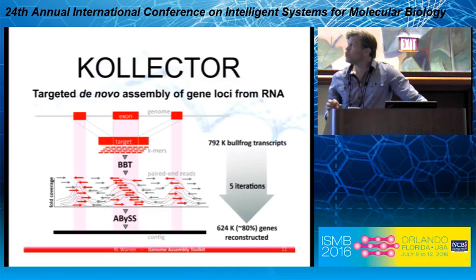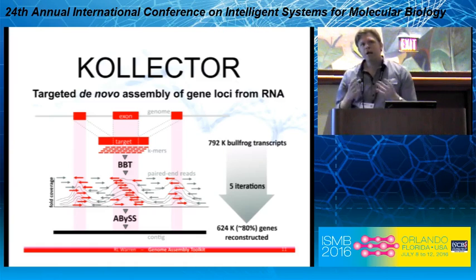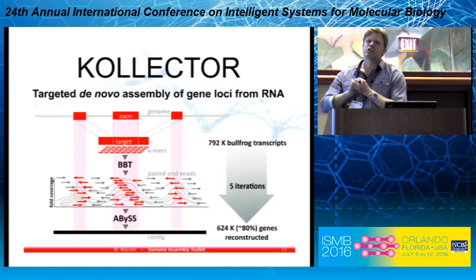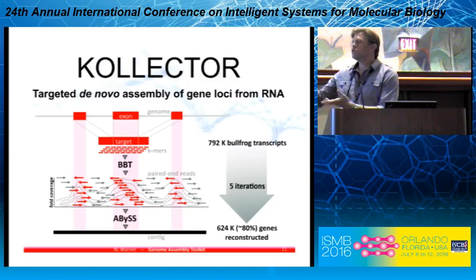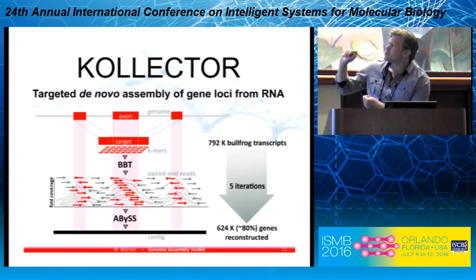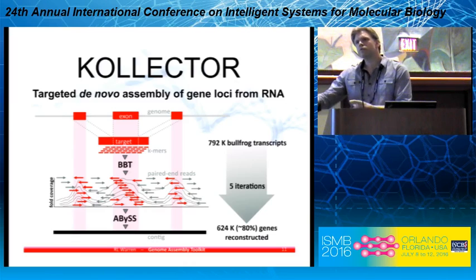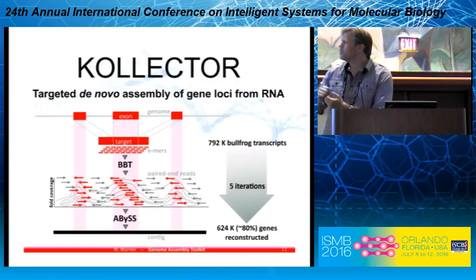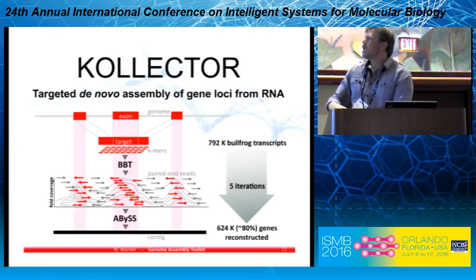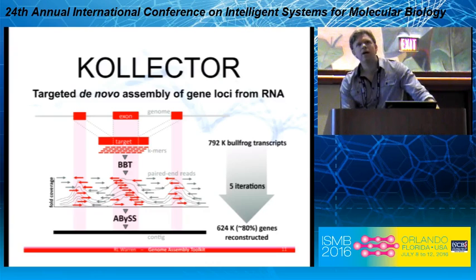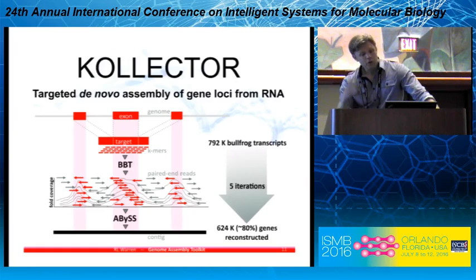BBT is an essential component of Collector, which is a pipeline for targeted assembly of gene loci using RNA. Transcripts are k-merized and the k-mers are used to build a bloom filter. You pass your reads through and can do several passes — the k-mers from the target transcript recruit reads and their mates in several iterations. You end up with sufficient coverage to do a de novo assembly. We did this on bullfrog: starting with about 800,000 transcripts, we assembled 80% of the corresponding gene loci.